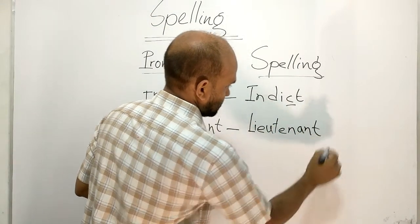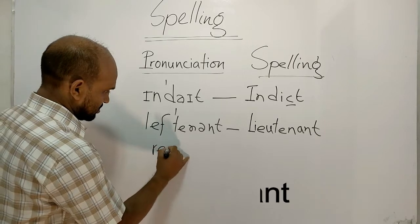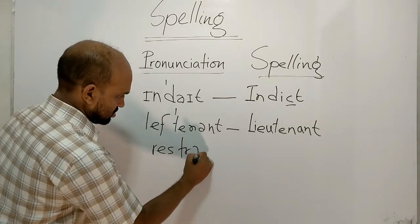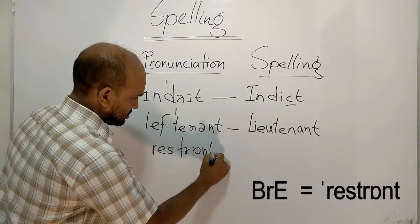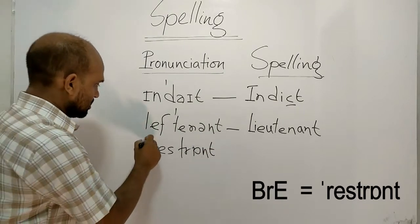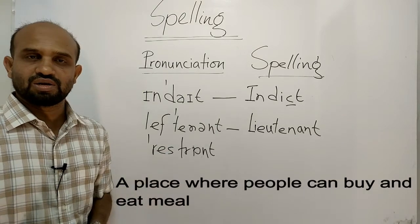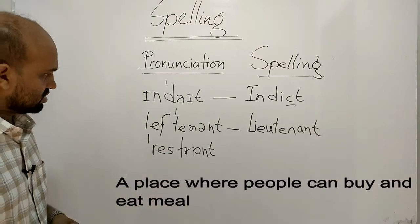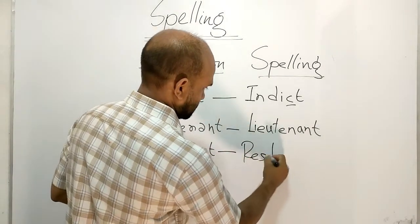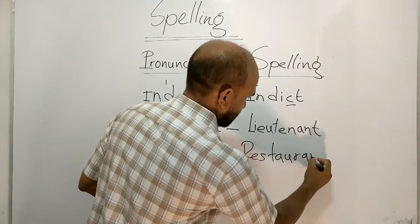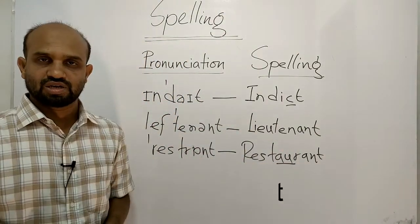Next one is restaurant. A place where people can buy or eat meal. Spelling is R-E-S-T-A-U-R-A-N-T, restaurant. These two letters remain silent here.